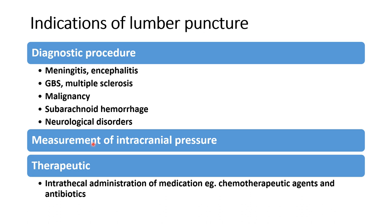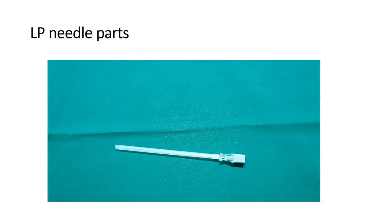Even for the measurement of intracranial pressure, whenever a patient has signs of raised intracranial pressure, we perform LP. For therapeutic indications: intrathecal administration of medications, for example chemotherapeutic agents in leukemias and CNS malignancy, and intrathecal administration of antibiotics — for example if the patient has a brain abscess.